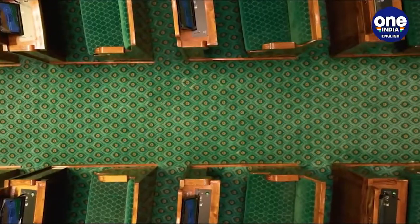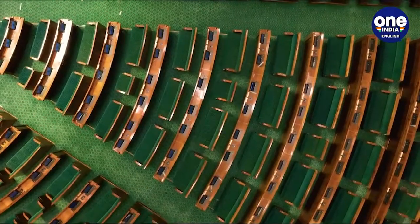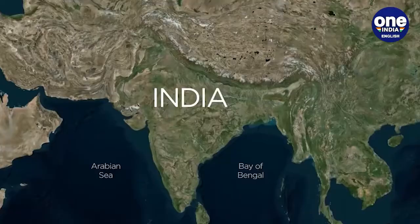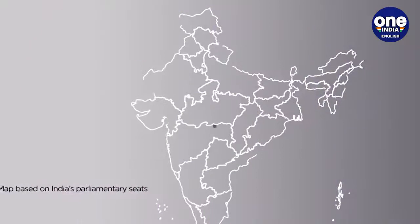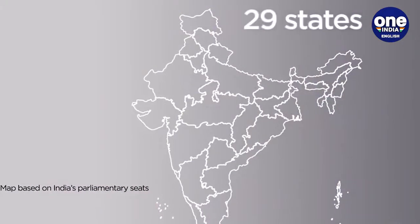The Lok Sabha comprises 543 seats allocated among states based on population, with additional provisions for scheduled castes and scheduled tribes.